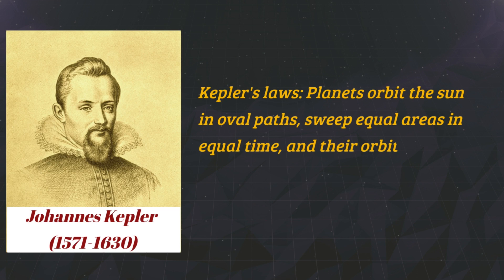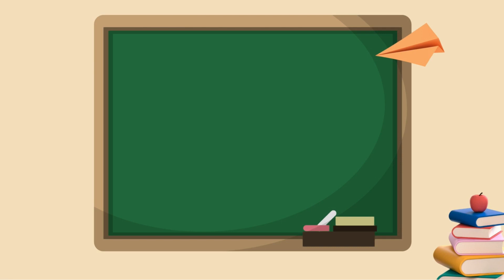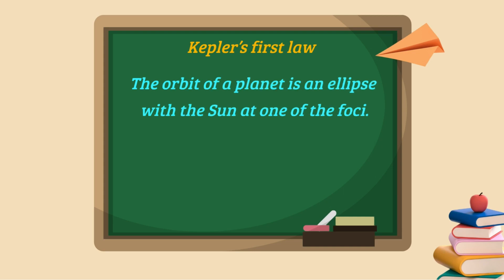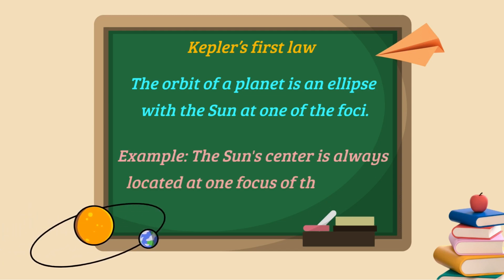Let me tell you, dear friends, Kepler was one of the most interesting and intelligent scientists I have ever read about. He told some laws in which his first law was: The orbit of a planet is an ellipse with the sun at one of the foci. The sun's center is always located at one focus of the orbital ellipse.